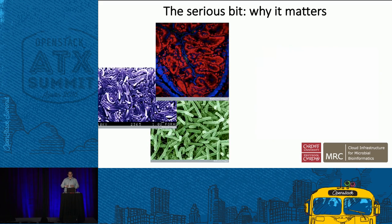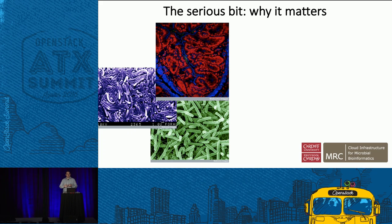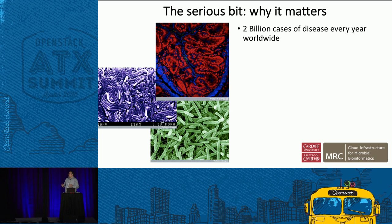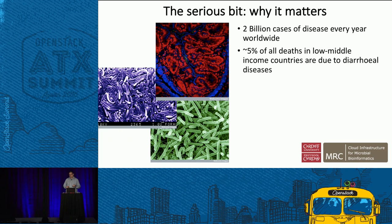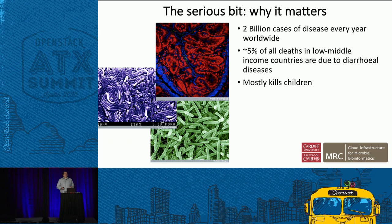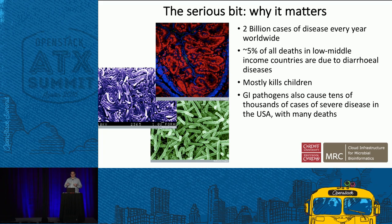In developed countries we often laugh about diarrheal disease — as a student you might have had a kebab after a night out, come home ill the next morning, and it's an inconvenience because we're well fed and healthy. But that 200 million cases a day translates to about 2 billion cases of disease every year worldwide. Five percent of all deaths in low- to middle-income countries are due to these diseases. It's mostly children who are affected. We do have gastrointestinal pathogens causing tens of thousands of cases in places like the US and UK as well, causing many deaths.